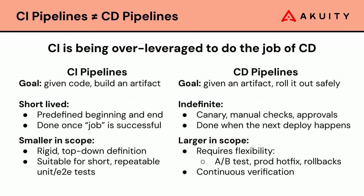For CI, your primary goal is: given some code, build and produce an artifact. For CD, your primary goal is: given an artifact, roll it out as safely as possible. CI pipelines tend to be short-lived — they have a predefined beginning and end, we call them jobs, and the pipeline is done once the job completes. Ideally pipelines need to be quick — GitHub is charging you by the minute. These jobs can run in parallel since each artifact can be produced independently. It's great when you know everything ahead of time and can define pipelines in a top-down, rigid DSL, and it's great for short, repeatable testing like unit and end-to-end testing.